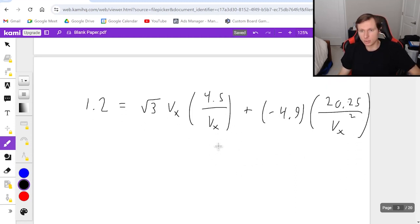Okay, next thing I'm going to do is I'm going to simplify this as much as possible. Mainly, the v_x's cancel right here, which is nice. So on the left, I just have 1.2 equals root 3 times 4.5. I'll plug that in a calculator now. That's going to be 7.79. And then minus what's 4.9 times 20.25. I get 99.2. And don't forget the v_x squared is still in the denominator. So this is great. Now I just have the one variable I need to solve for. It's v_x.